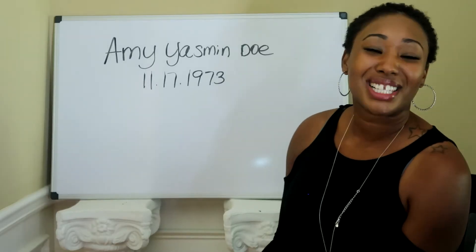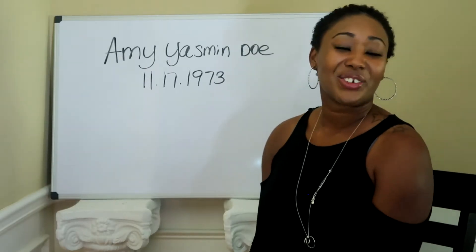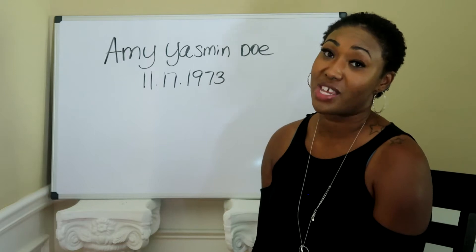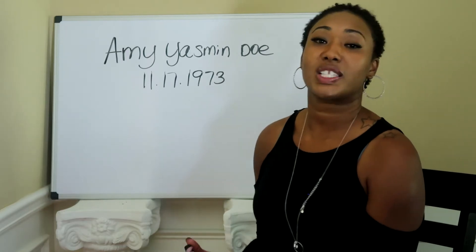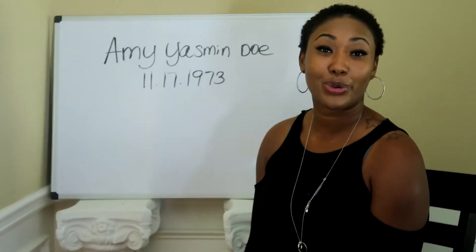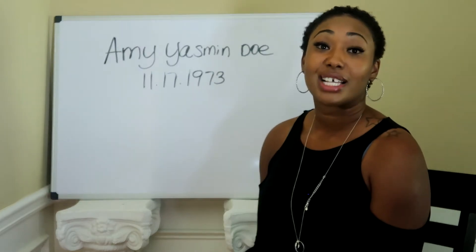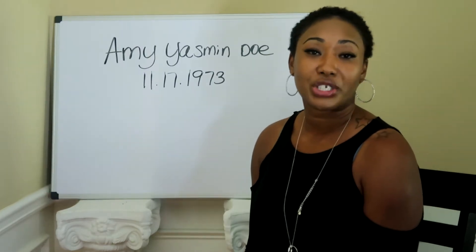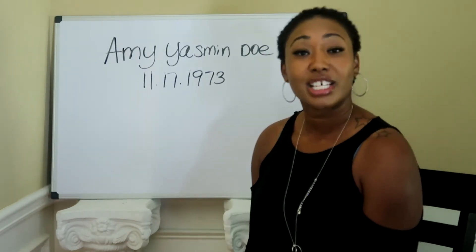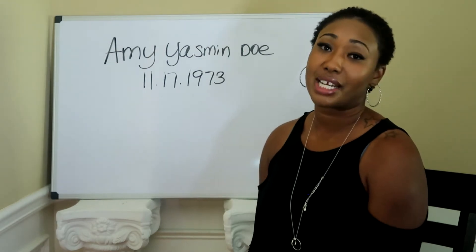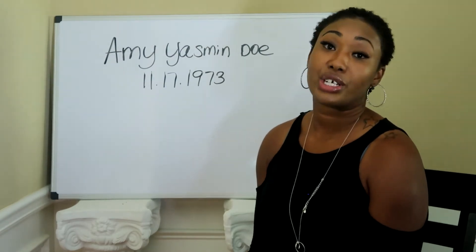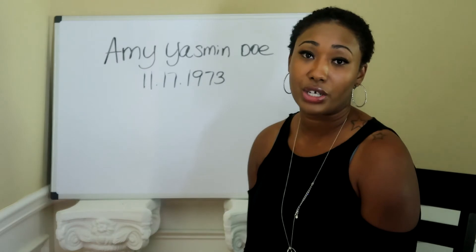Hello everyone, what is going on? Thank you guys so much for tuning in to this informational video on how to add up the four major placements in your numerology chart. If you aren't familiar with your numerology chart, your four major placements are your life path number, your destiny number, your personality number, and your soul urge number.